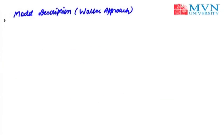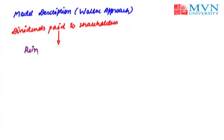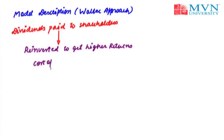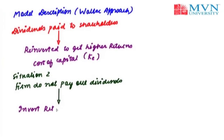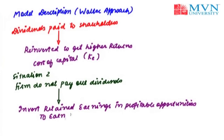According to Walter, dividend decisions are very much relevant to the value of a firm and the price of its shares. Walter feels that dividends paid to shareholders are reinvested by shareholders further to get higher returns. This is referred to as the opportunity cost of the firm, or the cost of capital, denoted by Ke. If the firm distributes profits as dividends, the shareholder reinvests that amount to earn a higher rate of return. In another situation, where the firm does not pay dividends, the firm invests the retained earnings in profitable opportunities to earn returns, denoted by R.